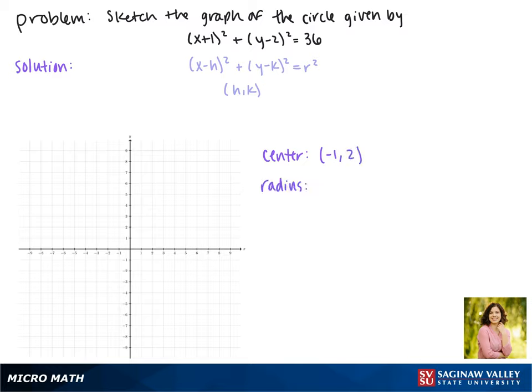Next we need to find the radius of our circle. Since in our equation r squared is 36, that means our radius, or r, must be 6.